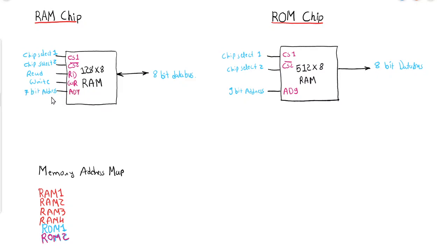The number of address bits depends on the size of the RAM. For example, if you have a 256×8 RAM, then instead of 7 there will be 8 address bits, because 2 raised to 8 equals 256. Here, 128×8 means we have a total of 128 locations, and on each location we can store 8 bits.